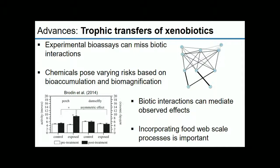A nice study by Brodin et al. looked at activity in perch and damselflies in response to exposure to two pharmaceuticals. The activity of perch post-treatment significantly increased compared to a null increase in damselfly activity. This asymmetric response led to an increase in the feeding rate of perch and consequently an increase in consumption of damselfly prey — which were also shown to bioaccumulate these pharmaceuticals — leading to an overall increase in trophic transfer of chemicals through the food web.